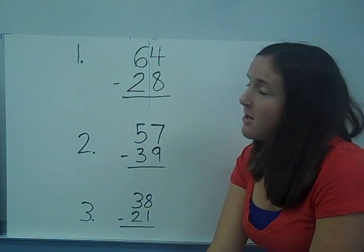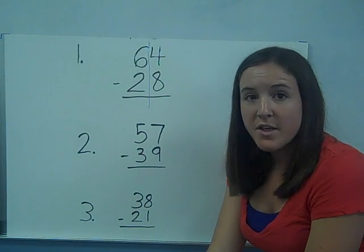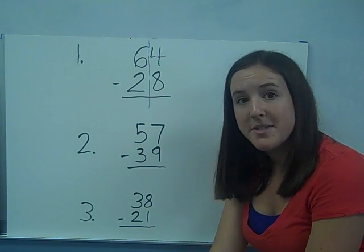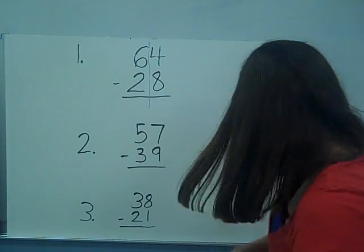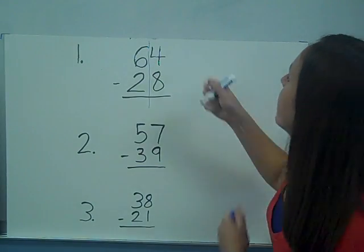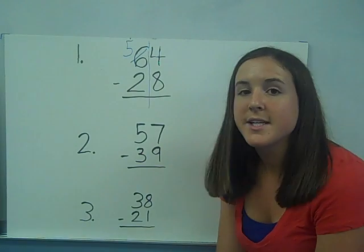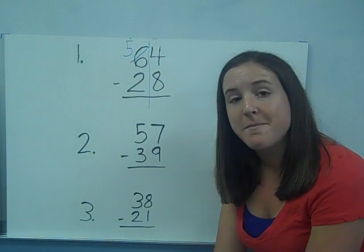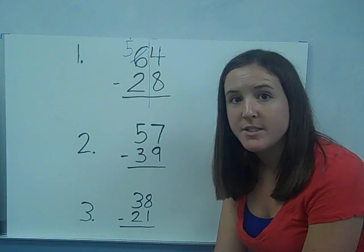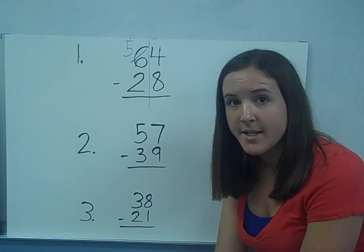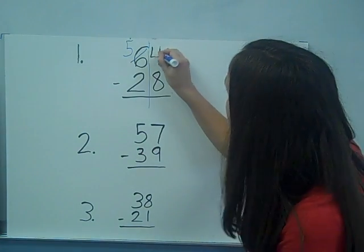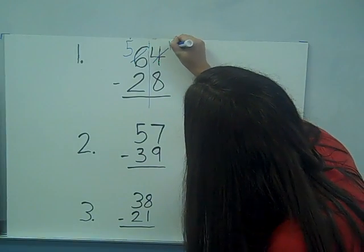So this six means that there are six tens. One of those tens is going to ungroup itself into ten ones, which leaves us with five tens. And we're going to take those ten ones and add them to the four ones that we already have. So ten ones plus four ones is fourteen ones. So we cross out the four and we write fourteen.